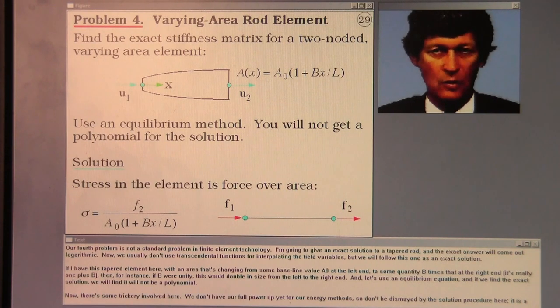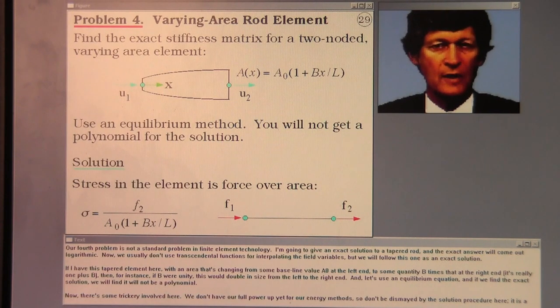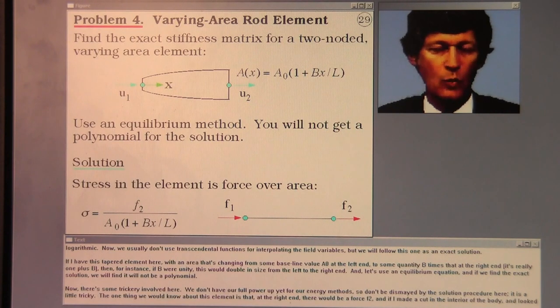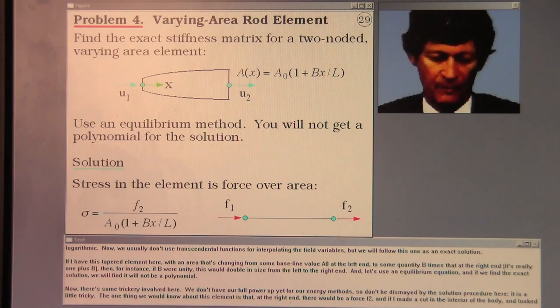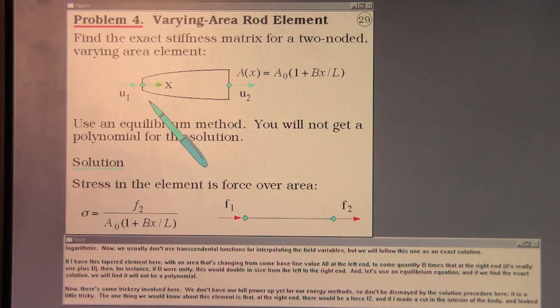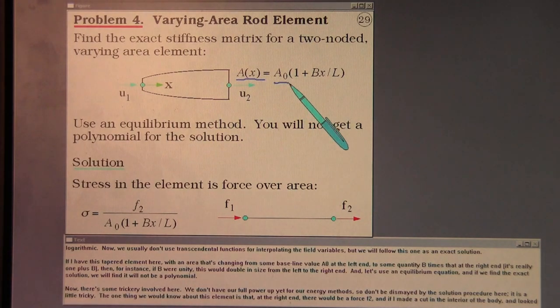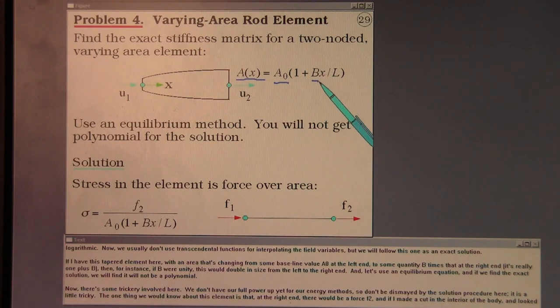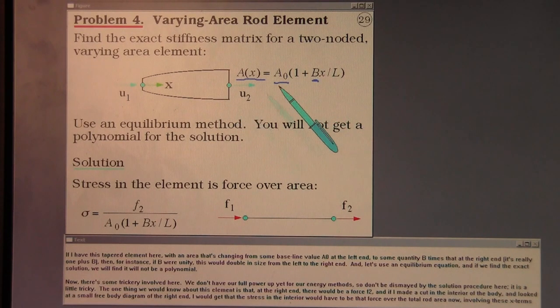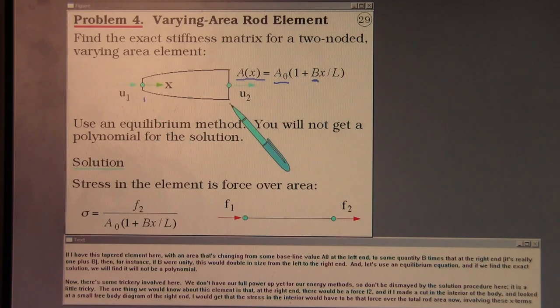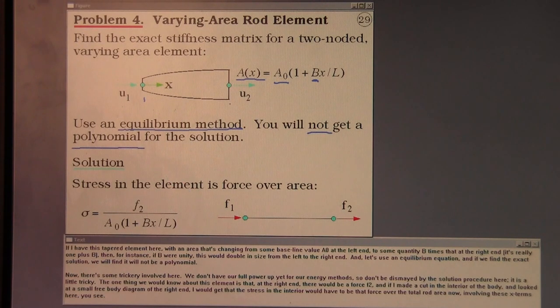Our fourth problem is not a standard problem in finite element technology. I'm going to give an exact solution to a tapered rod, and the exact answer will come out logarithmic. Now we usually don't use transcendental functions for interpolating the field variables, but we will follow this one as an exact solution. If I have this tapered element here with an area that's changing from some baseline value a-zero at the left end to some quantity b times that at the right end, it's really one plus b. Then, for instance, if b were unity, this would double in size from the left to the right end. And let's use an equilibrium equation, and if we find the exact solution we'll find it will not be a polynomial. Now there's some trickery involved here. We don't have our full power up yet for our energy methods, so don't be dismayed by the solution procedure here. It is a little tricky.